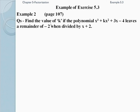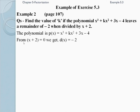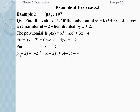Find the value of k if the polynomial x³ + kx² + 3x - 4 leaves a remainder of -2 when divided by x + 2. The polynomial is P(x) = x³ + kx² + 3x - 4. From x + 2 = 0, we get x = -2. Putting x = -2: P(-2) = (-2)³ + k(-2)² + 3(-2) - 4.